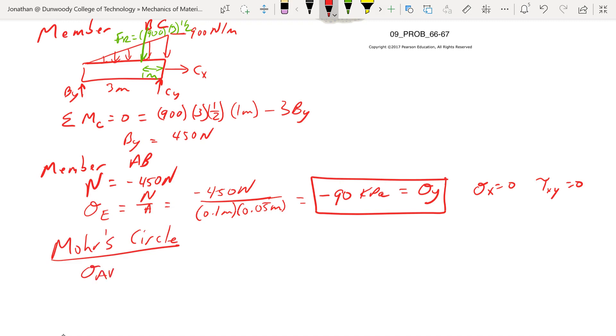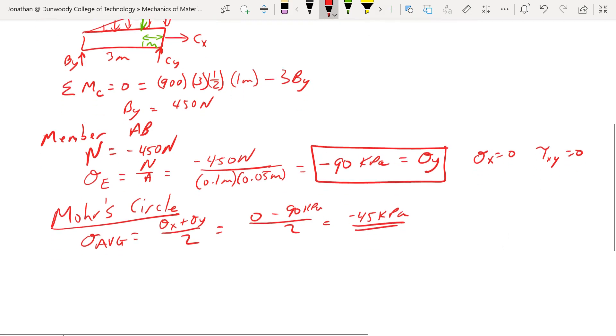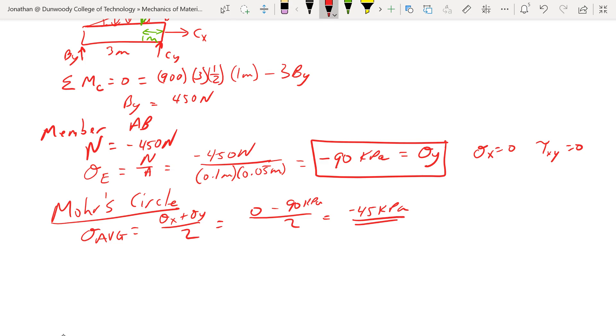We need sigma average, is going to be sigma x plus sigma y over 2. So we get 0 minus 90 kilopascal over 2. So we get negative 45 kilopascal. R is going to be from this point to there. So we don't have any tau here, so it's going to be R equals the square root of negative 90 minus negative 45 squared, 45 kilopascals.